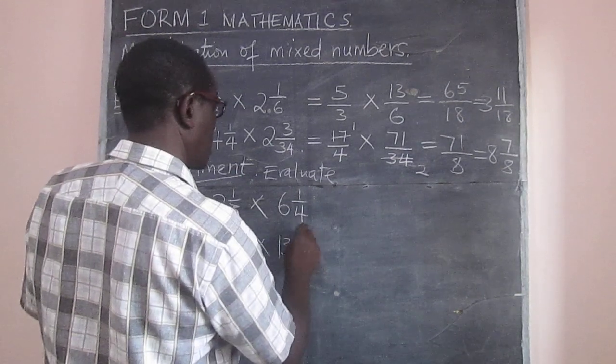And here we have six and eleven over nineteen multiplied by thirteen and seven over eleven. We can look at that for our homework.